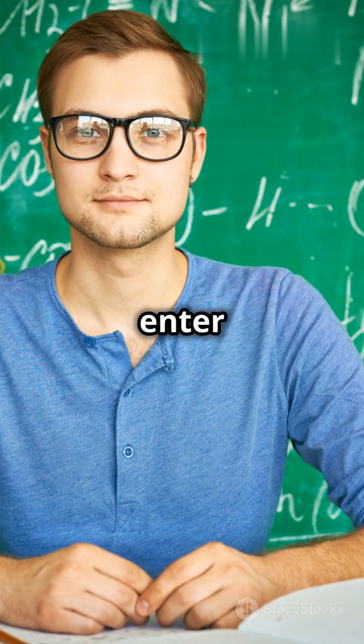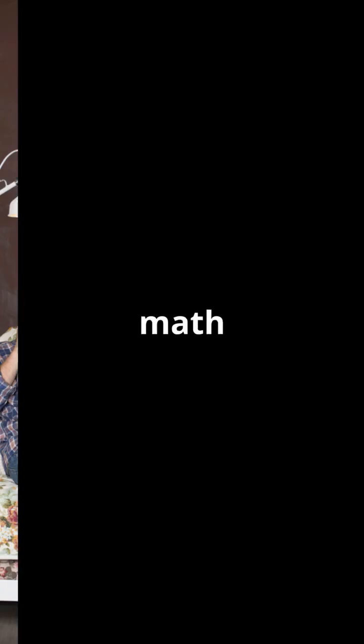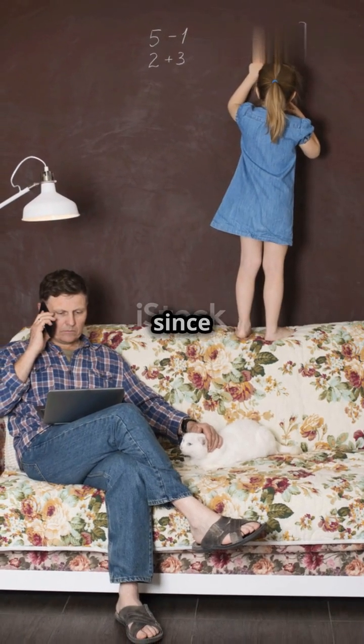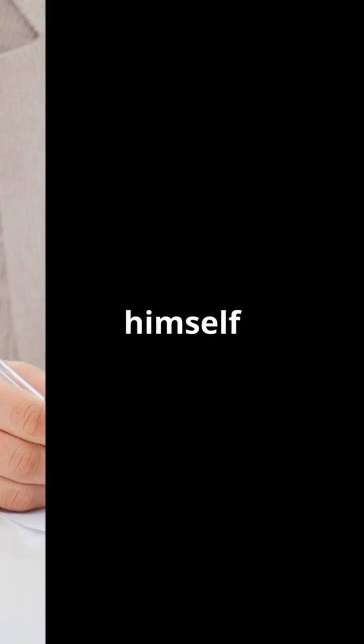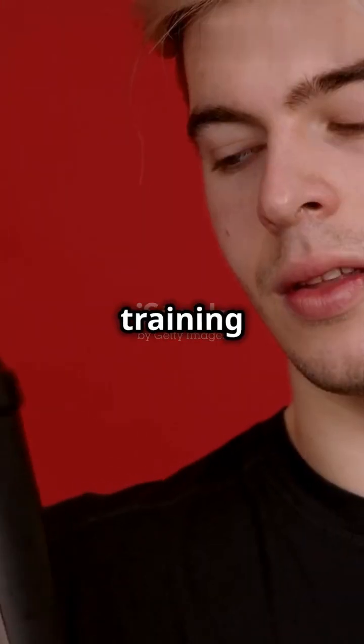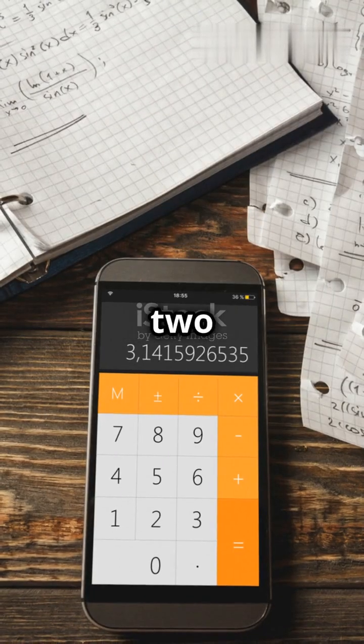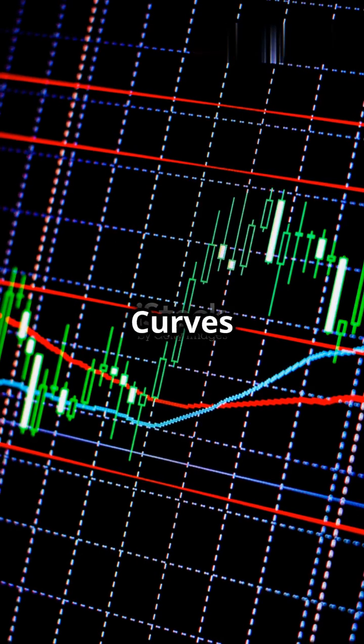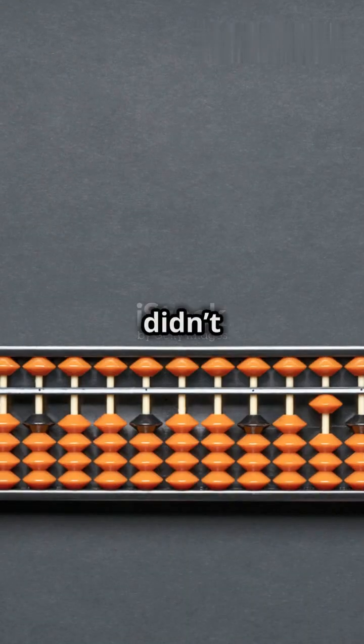Then in 1994 enter Andrew Wiles, this absolute math warlord who had been obsessed with this problem since he was 10. Bro locked himself in a room for 7 years like he was training for the final boss battle and cooked up a 200-page proof using elliptic curves and modular forms. Stuff Fermat didn't even know existed.